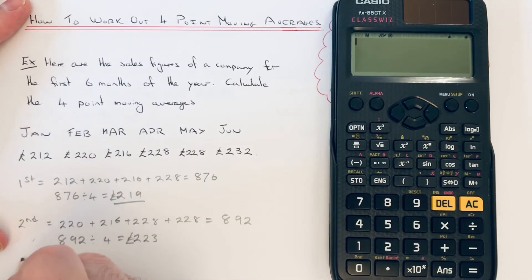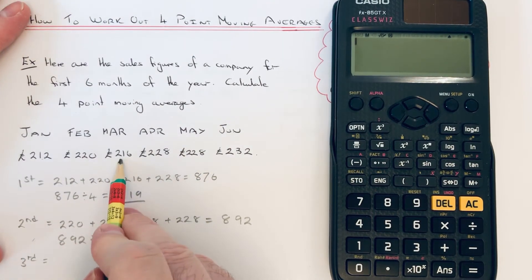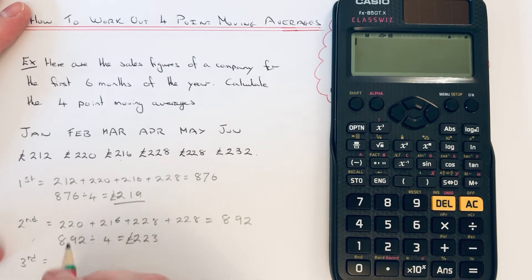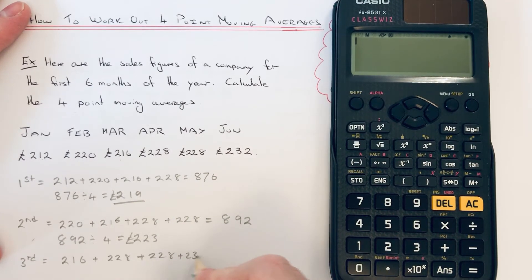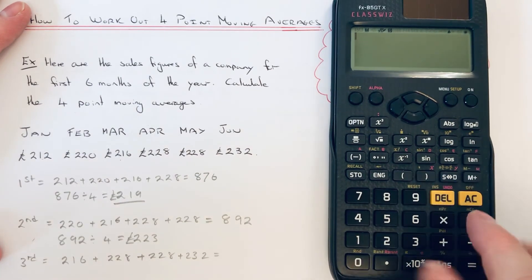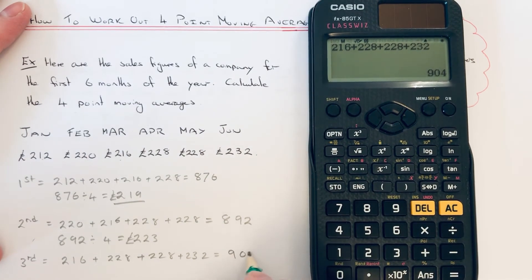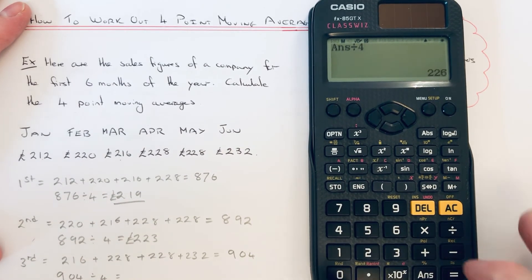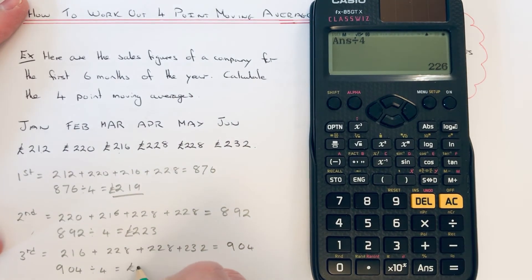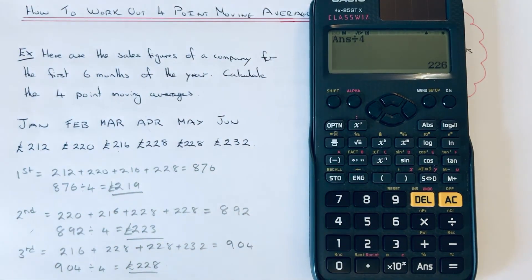For our third four point moving average, this time we start on 216 and add up the four numbers from there: 216, add 228, add 228, add 232. We get 904 and then divide that by four, which comes out as 228. And that's our final four point moving average, because we haven't got another four numbers to add up — we don't have July's figures.